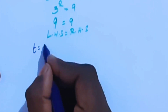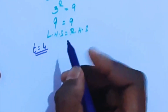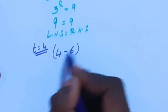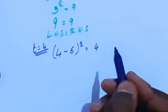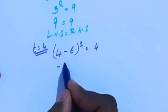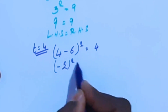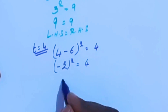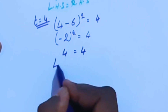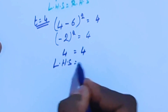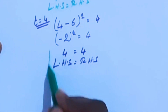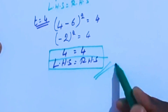Now verifying t equals 4: applying (4 minus 6) whole square equals 4, we get (minus 2) whole square equals 4, so 4 equals 4. LHS equals RHS, this is also verified. Thanks for watching this video.